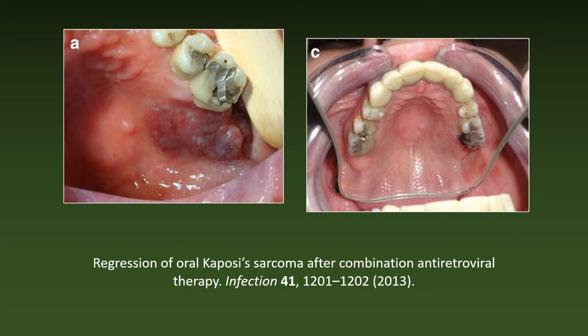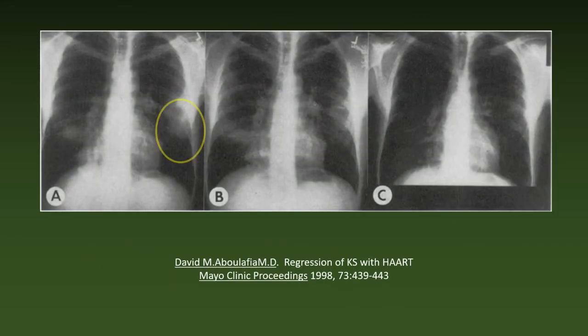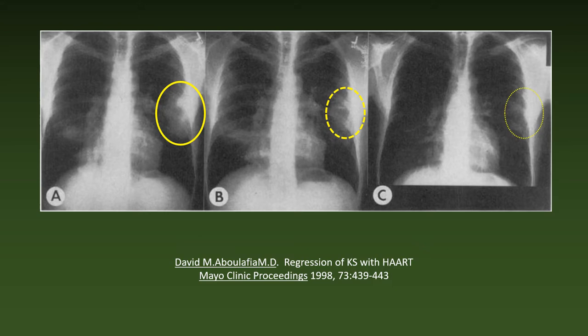But HAART can also cure KS. In patients who already have Kaposi's sarcoma at the start of HAART, it may cause lesions to regress and disappear. Here is an example taken from the literature. In this example, a biopsy-proven KS lesion of the chest wall regressed on HAART. However, while remission is the rule, some KS tumors do not respond to HAART for reasons which are not entirely clear.